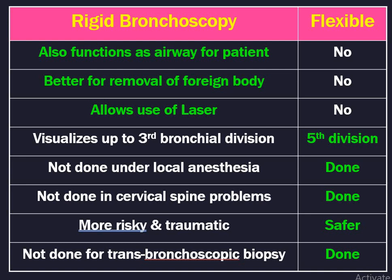The differences between rigid bronchoscopy and flexible bronchoscopy are also commonly asked. Rigid bronchoscopy acts as the airway for the patient; flexible cannot. Rigid bronchoscopy is better for removal of foreign body; flexible is difficult. Rigid bronchoscopy allows use of laser; flexible does not. Limitations of rigid: it visualizes only up to the third segmental bronchial division, whereas flexible can go up to the fifth division. Rigid is not done under local anesthesia; flexible is. Rigid is not done in cervical spine problems because the neck must be hyper-extended; flexible can be performed. Rigid is more risky and traumatic. Both rigid and flexible share the same airway with anesthesia, so saturation may drop.